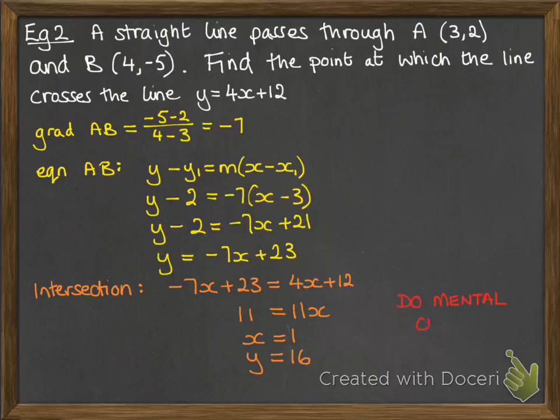And then do a mental check as well. If we put it into minus 7x plus 23, we'll get minus 7 times 1 is minus 7. Add to the 23, gives us 16. It works that way as well.